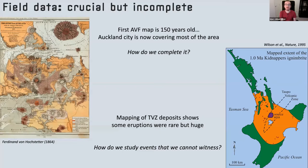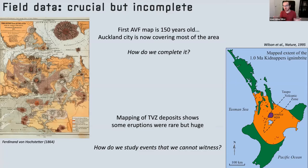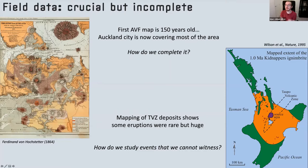The Auckland city is now covering most of the area. Since it has been built over these volcanoes — sometimes quarried over, sometimes bulldozed over — we need to understand where they are and how they formed. New Zealand doesn't have long historical records. Europeans arrived in the late 1700s and that's when written records start. Before that, the Māori and Pacific Islanders there did not keep written historical records.